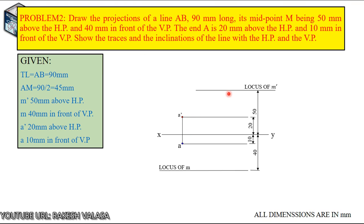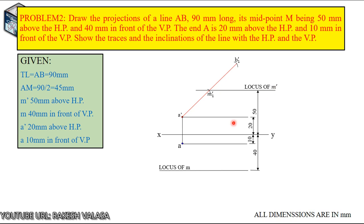We know the full length, that is AB equal to 90mm. One condition is given: the midpoint. We know the locus of midpoint M dash and locus of M. So take the engineering compass and measure 45mm length. A dash is the center — draw the arc on the locus of M dash. The point name is M1 dash, that means the initial front view length. Now draw the line through M1 dash. Join A dash and M1 dash, and extend up to 90mm. This end point name is B1 dash. A dash to B1 dash is the initial front view length, meaning AB equals the true length of 90mm.